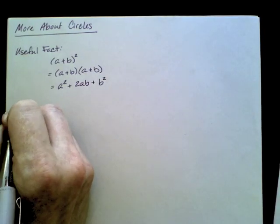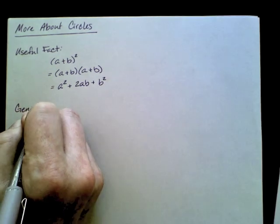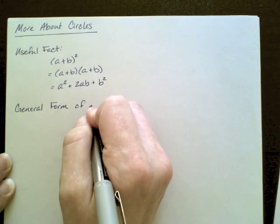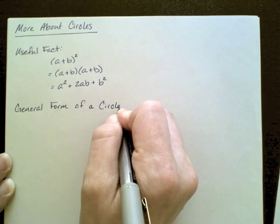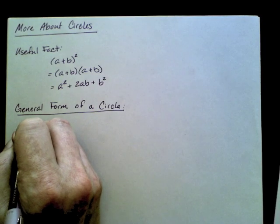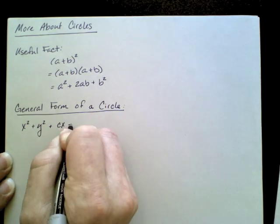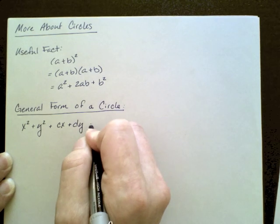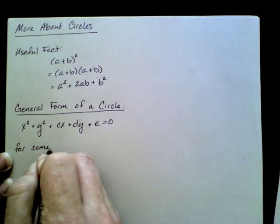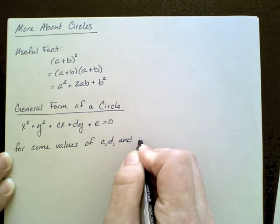Now to bring it around to circles, the general form of a circle is x squared plus y squared plus cx plus dy plus e equals 0 for some values of c, d, and e.